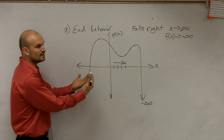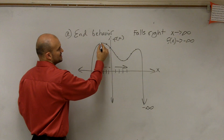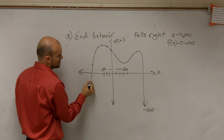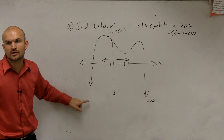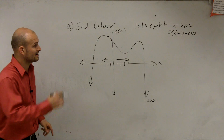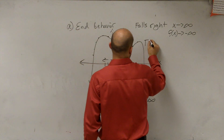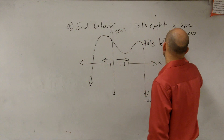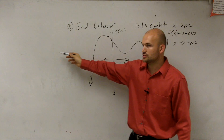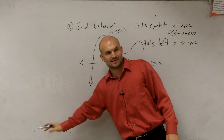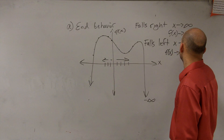Now let's look the other way. As my x-coordinates go to the left, where do my f(x) points go? They go down to negative infinity again. So the end behavior falls left as well. Mathematically, as x approaches negative infinity, the f(x) values also go down to negative infinity — so f(x) approaches negative infinity.